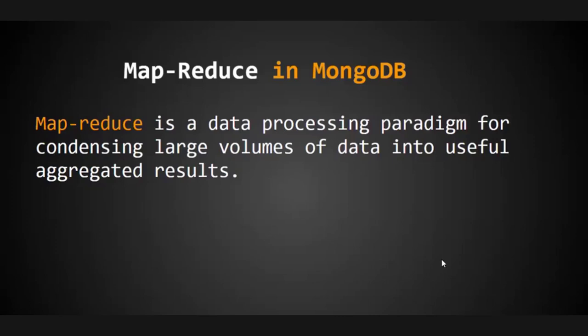So map reduce is a data processing paradigm for condensing large volumes of data into useful aggregated results. Suppose we have a large volume of data containing lots of information about a particular user, employee, or student. With large amounts of data we can't go line by line and search, so we use the map reduce function to get aggregated results as per the query we provide.